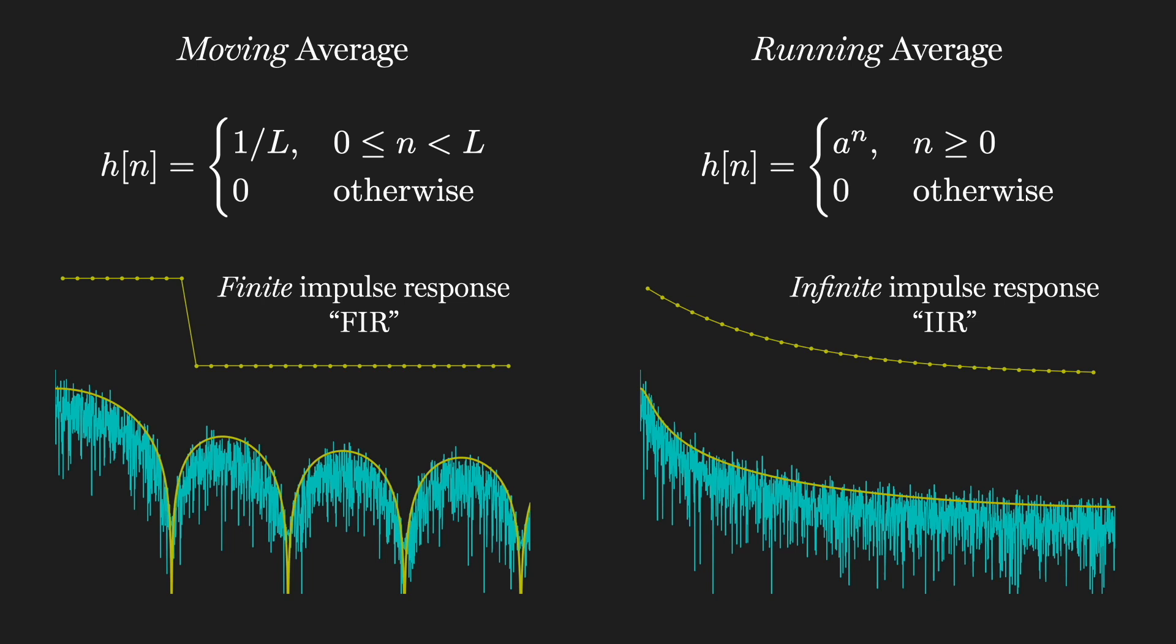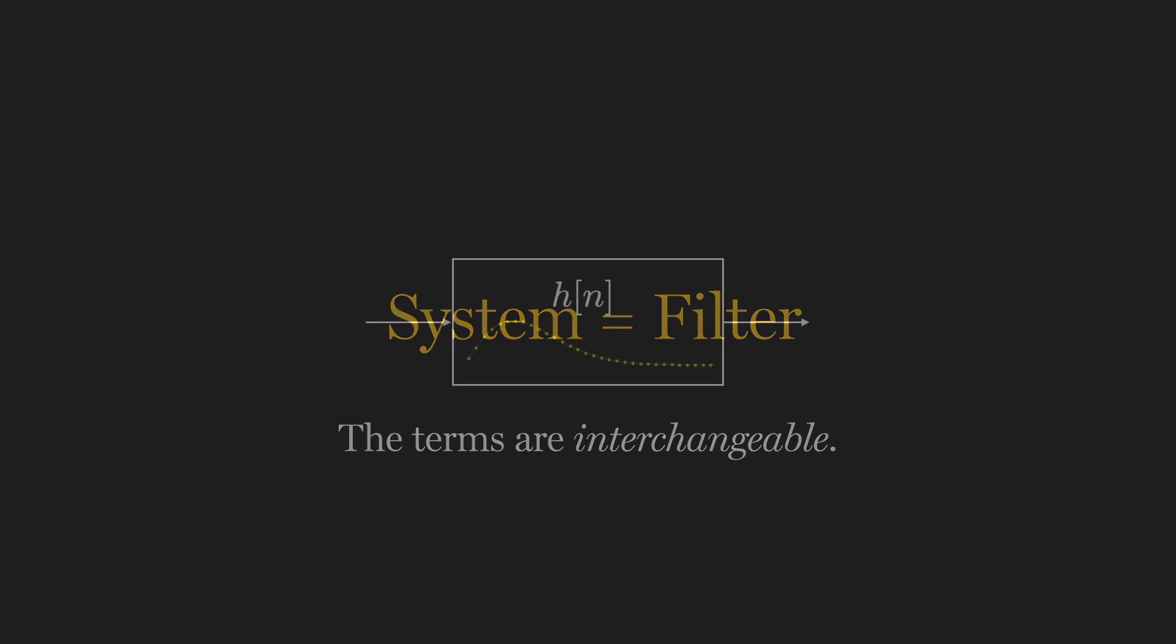Let's start by specifying some of the conditions required to formulate filtering as convolution. This depends on a few key aspects in the design of a filter or system, and recall that the terms filter and system are interchangeable. First, the system must be linear.